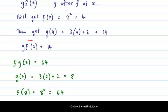So when we got g after f of 2, we got 14. But f after g of 2 is 64. So they're not equal.